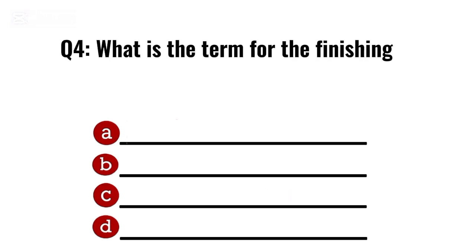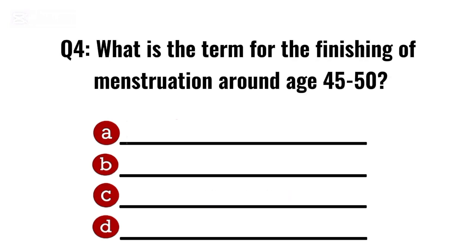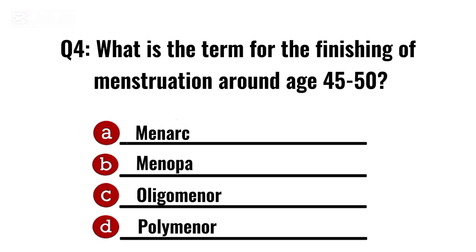Question 4. What is the term for the finishing of menstruation around age 45 to 50? Correct option B: Menopause.